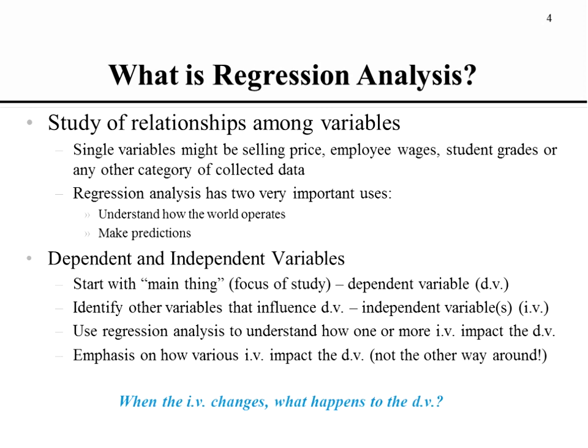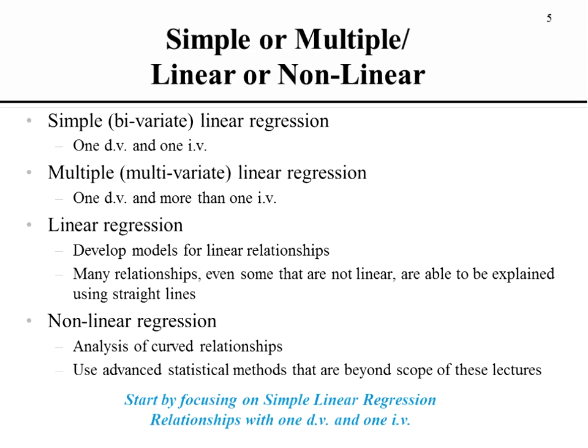For regression analysis, understand that we're going to have one dependent variable. In simple regression analysis we'll have one corresponding independent variable. Later in multiple regression analysis, we'll still have one dependent variable but bring in multiple independent variables. The dependent variable is the follower variable — when we change any of our independent variables, we're curious about what then happens to the dependent variable.